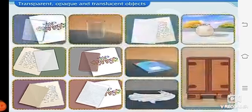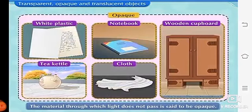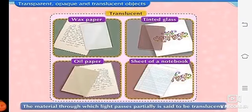We have studied that the material through which light passes is said to be transparent. The material through which light does not pass is said to be opaque. And the material through which light passes partially is said to be translucent.